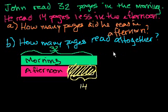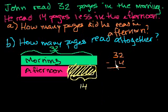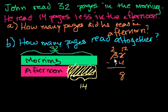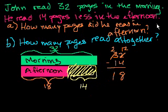He read 32 pages in the morning, and that's 14 more than he read in the afternoon, so we subtract 14. In the ones place, 2 is less than 4, so we regroup: take 10 from the 30, leaving 20, and add it to the ones place to get 12. So 12 minus 4 is 8, and 2 minus 1 in the tens place is 1. In the afternoon, he read 18 pages. The answer to part A is 18.